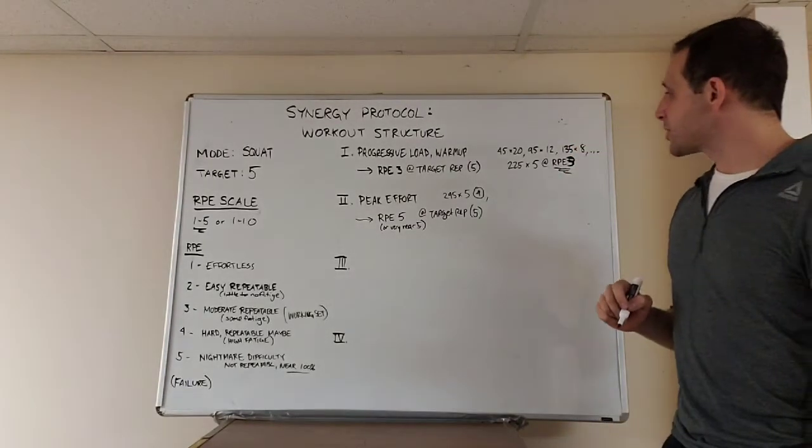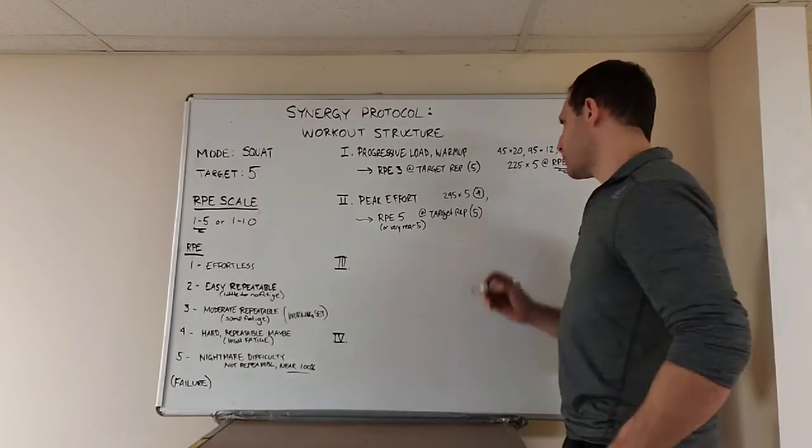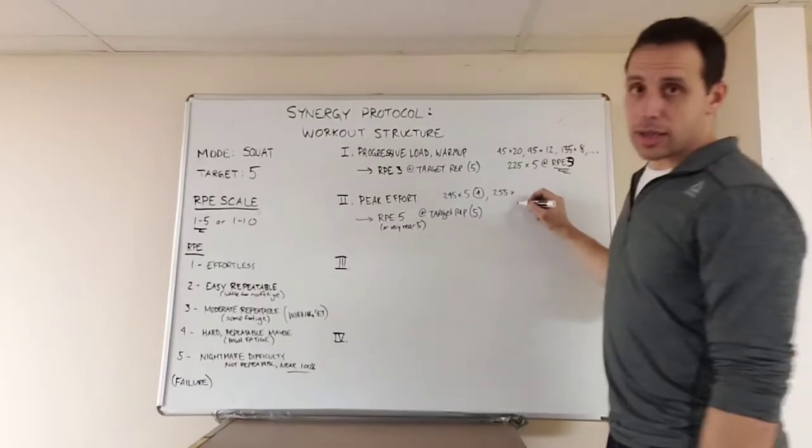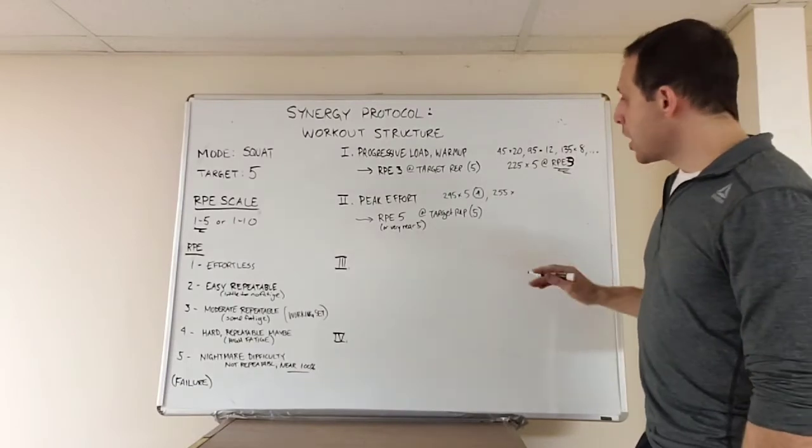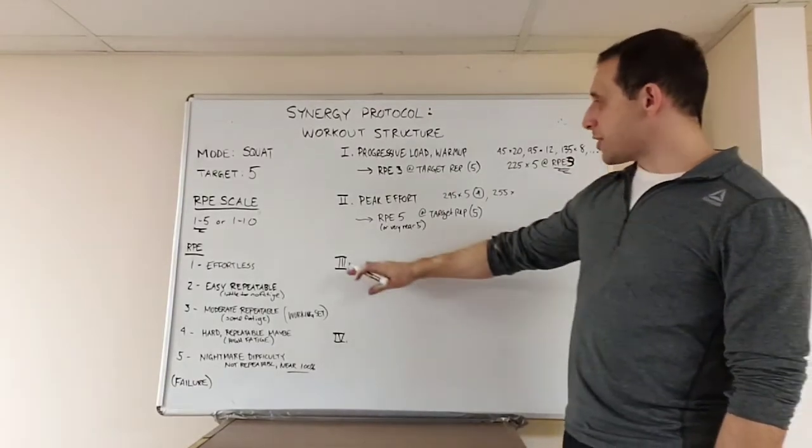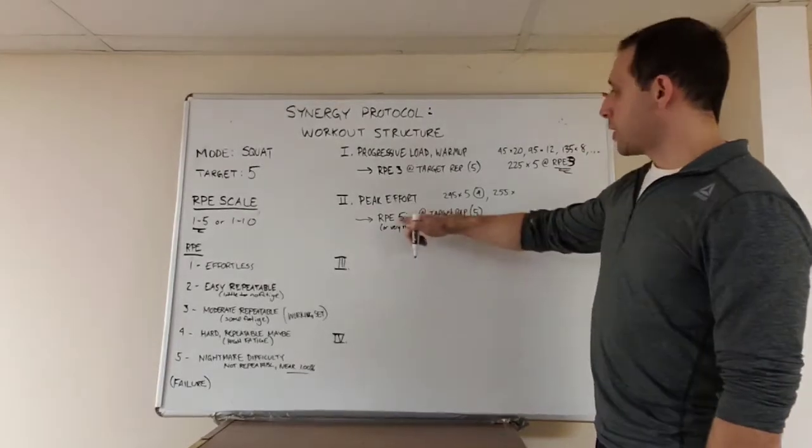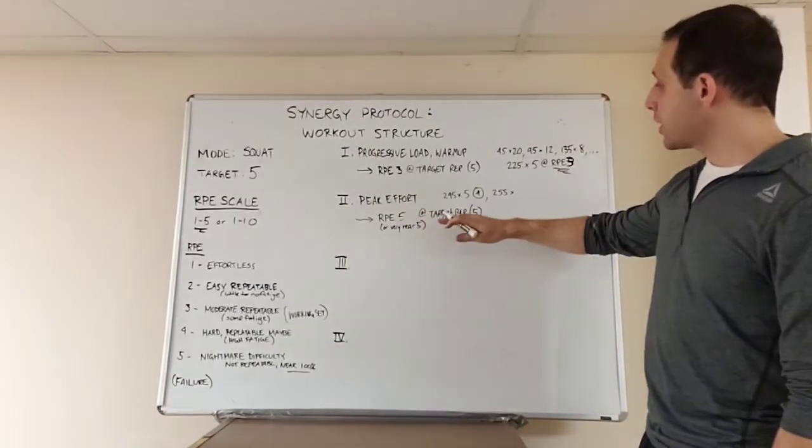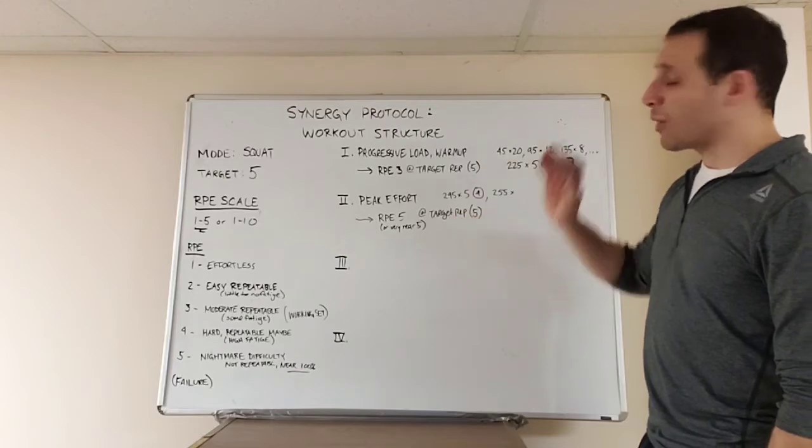And now he's going to make a more conservative jump. He's going to go 255. Now, depending on what happens here, he's going to make some decisions. There's a point at which you're going to move on to phase 3. And that's when you get an RPE of 5 at the target rep range of 5. However, that might not happen. You might overshoot it. You might fail.